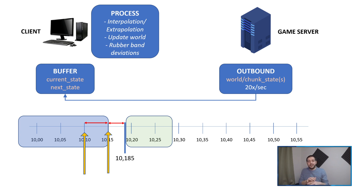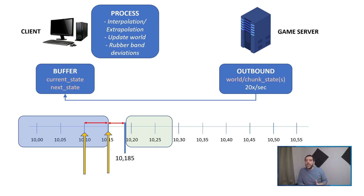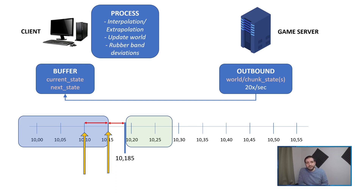Now of course that's a big assumption — that everything keeps moving in the same direction — and we're going to create small deviations if players, mobs, or NPCs made turns during those couple of milliseconds. However, as future world states keep coming in from the server we are slowly adjusting all those movements, and as soon as we have a future packet again we immediately fix everything and we're back on track. This way the movement keeps smooth and the player doesn't experience the lag spike they would have otherwise experienced.